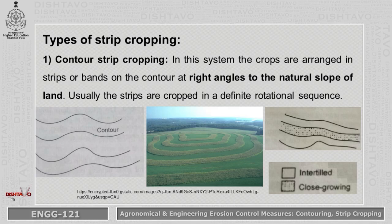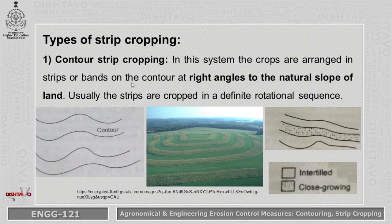There are a number of types of strip cropping. The first is Contour Strip Cropping. In this system, crops are arranged in strips or bands on the contour at right angles to the natural slope of land, as shown in the diagram. The strips are cropped in a definite rotational sequence.